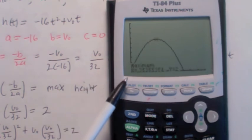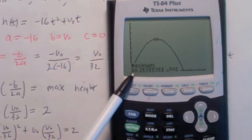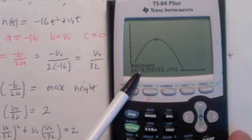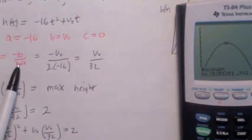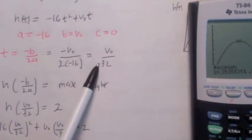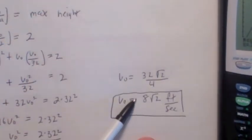And what you end up with is the y coordinate is 2, which it should be. Remember the cricket jumps 2 feet high. And this t coordinate actually is 0.353. Now what does that 0.353 mean? That's equal to negative b over 2a, right? So that should equal v₀ over 32.